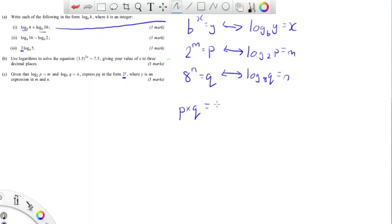And what about if I had log base 8 of Q is equal to N? If I change that around, I'd have 8 to the N power is equal to Q. Ah, well, if I want P times Q, that's going to be the same thing as 2 to the M times 8 to the N.